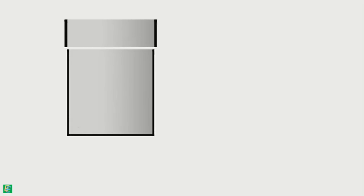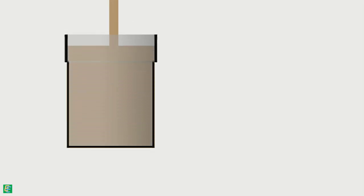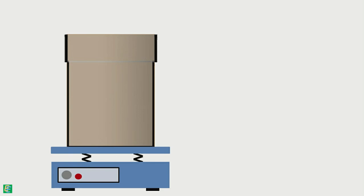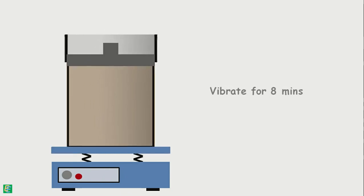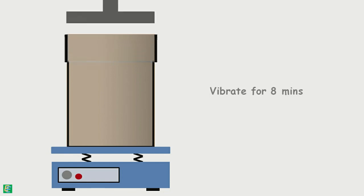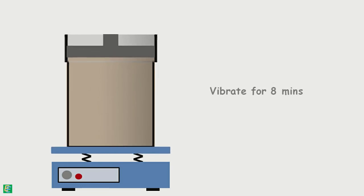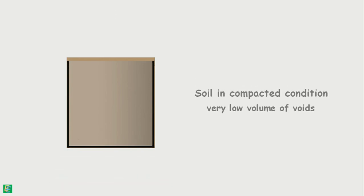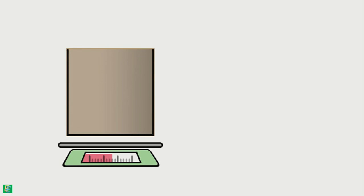Remove the soil content from the mold, attach the sleeve of the mold, and fill the soil up to the sleeve's brim. Place this arrangement on a vibrator deck and place a surcharge load on the soil surface. Then vibrate it for 8 minutes. If the soil's top surface falls below the mold's brim, add more soil and vibrate it for another 8 minutes. This way, soil can be obtained in a compacted state with very low volume of voids. Remove the sleeve, trim the soil surface, and take the weight of the mold again, noting it as W3.